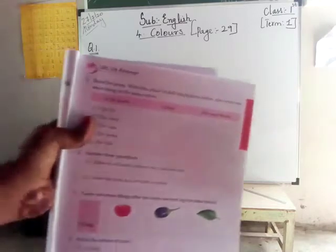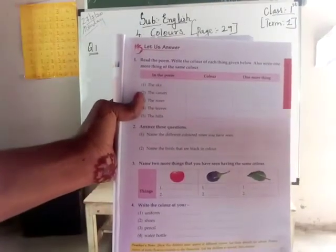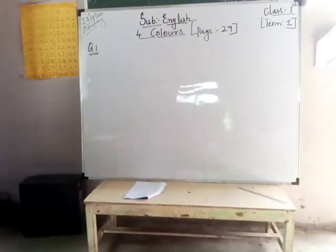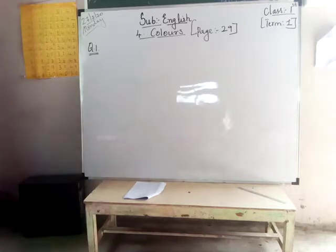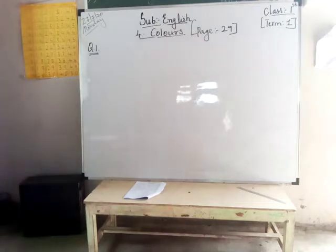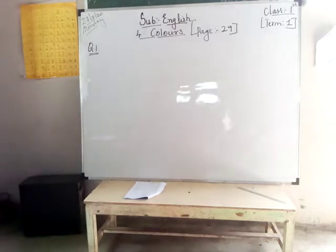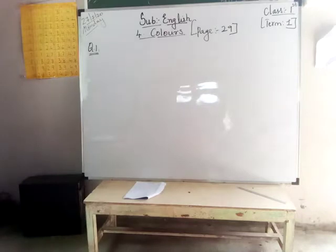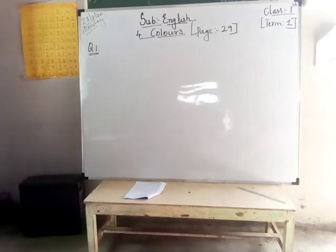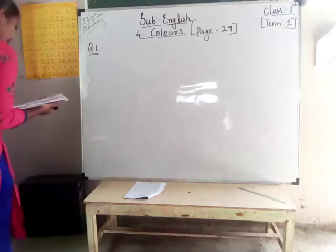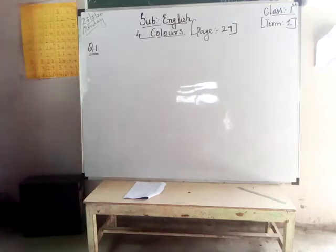Question number 1: Read the poem, write the colour of each thing given below. Also write one more thing of the same colour. See the heading, children — what they are given: the sky, the canary, the roses, the leaves, the hills. Five words are given there. So we have to write the colour of the sky, and then one more thing. Blue is the colour of the sky, and water is also blue.